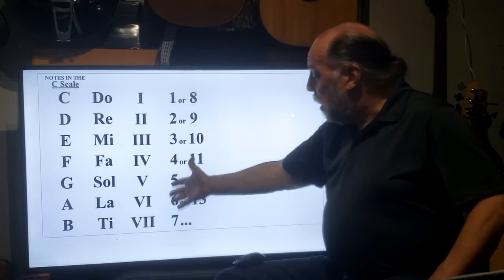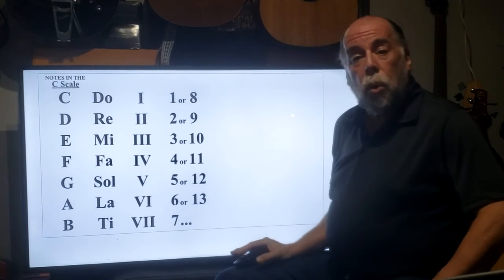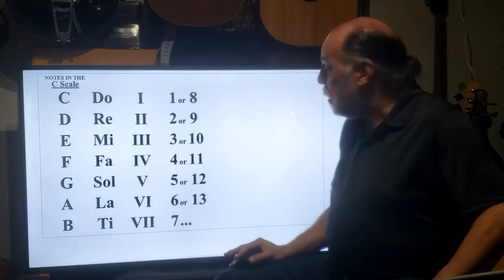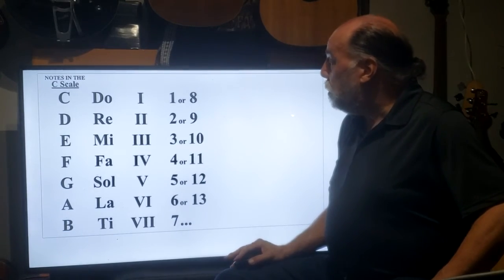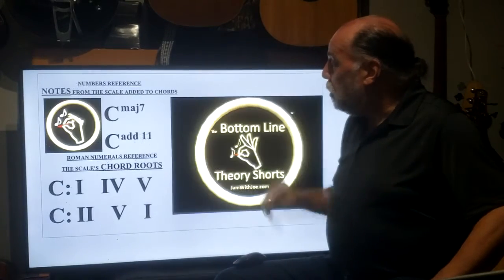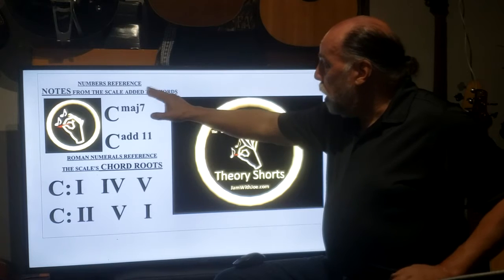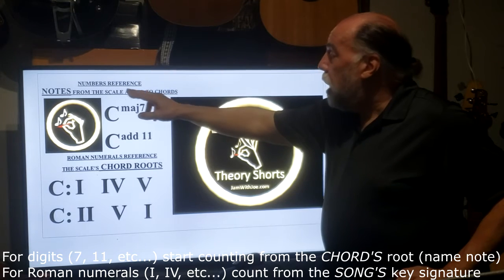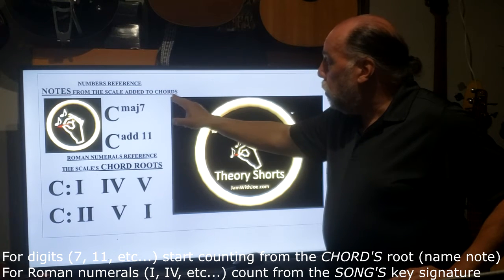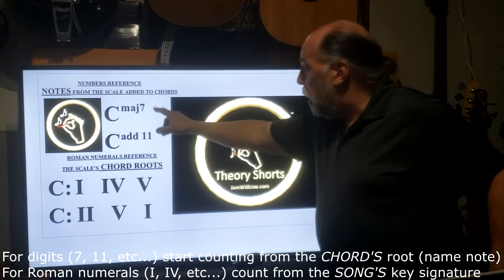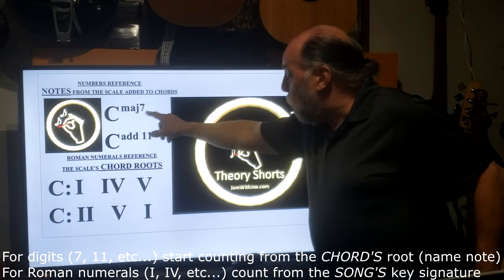Now chords are represented by Roman numerals. So in a nutshell, when we see numbers, they reference notes from the scale added to chords.